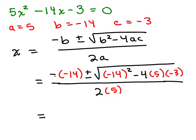Now I'm going to take the opposite of negative 14 which is positive 14, plus or minus. Underneath the square root we have to simplify. First we have to do the squaring. Negative 14 squared, that's negative 14 times negative 14, that's 196. Then I've got minus 4 times 5 times negative 3. We have a negative and a negative, that's going to be a positive, and that will give me 60.